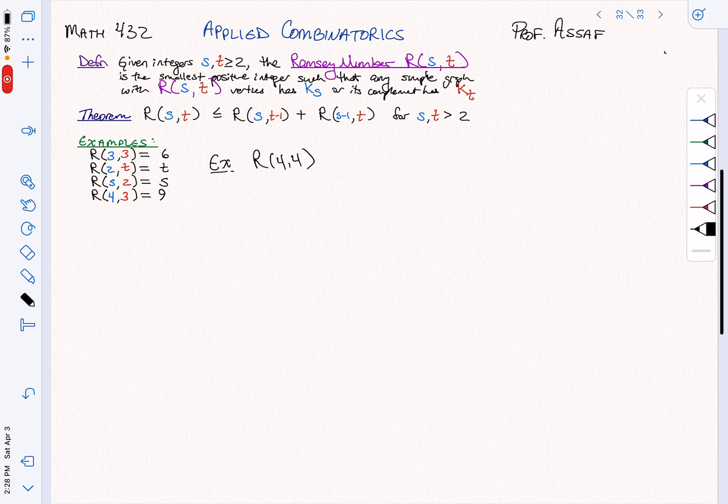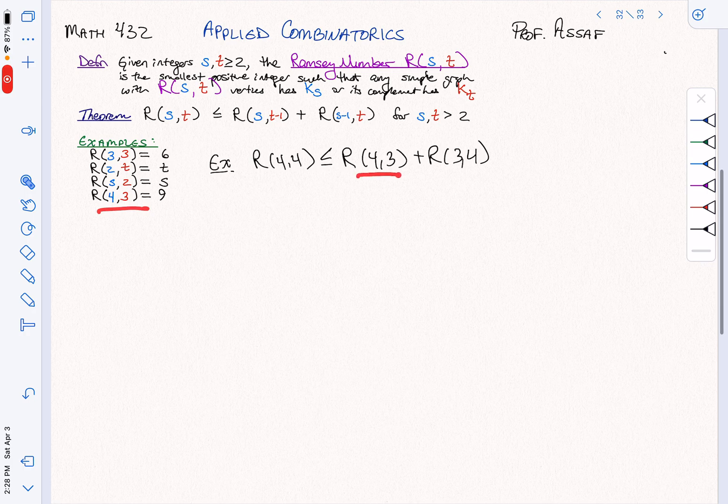That tells us what our worst case that we expect is. So R of 4, 4, using our bound, this is going to be R of 4, 3 plus R of 3, 4. And even though we only have 4, 3 written here, the Ramsey numbers are symmetric. So this is just twice R of 4, 3. We computed R of 4, 3 is 9. So this is giving us an upper bound of 18.